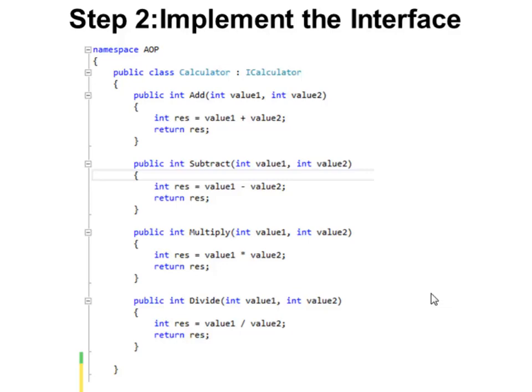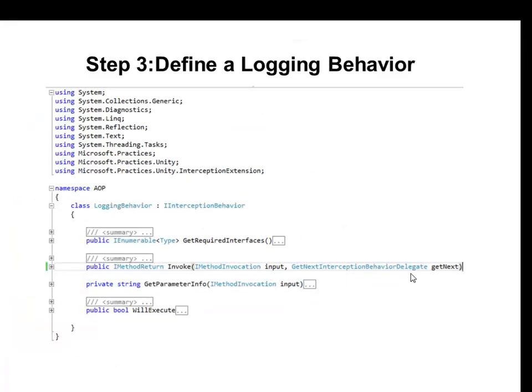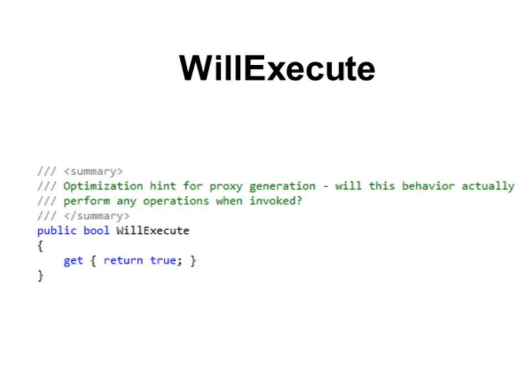Step three is to define a logging behavior class. The logging behavior class implements IInterceptionBehavior. It has three methods: GetRequiredInterfaces, Invoke, and WillExecute. IInterceptionBehavior has a property called WillExecute. This property is an optimization hint to the interceptor. If you return true through this property, the interceptor will execute the behavior.